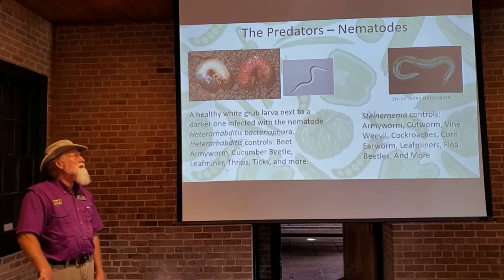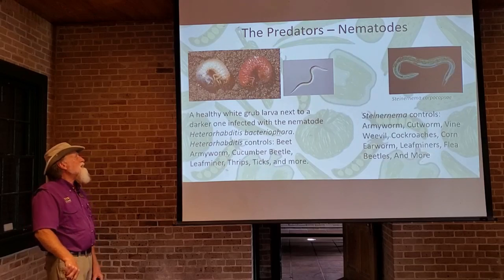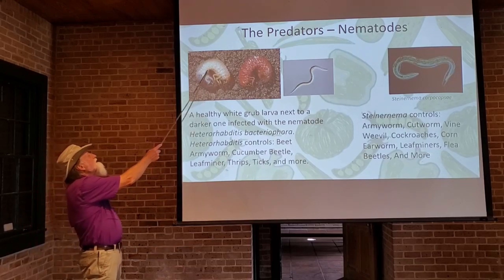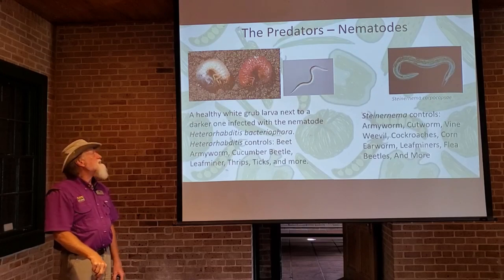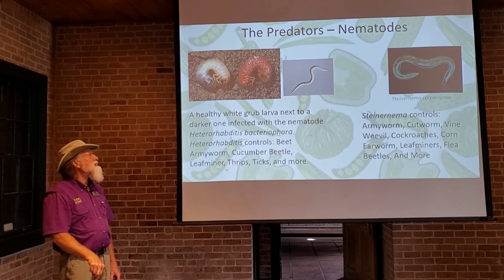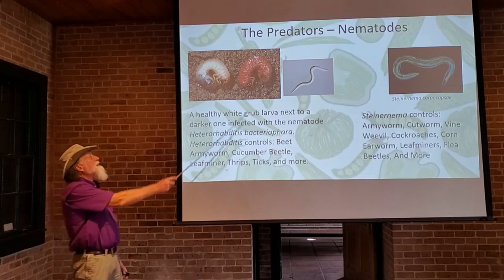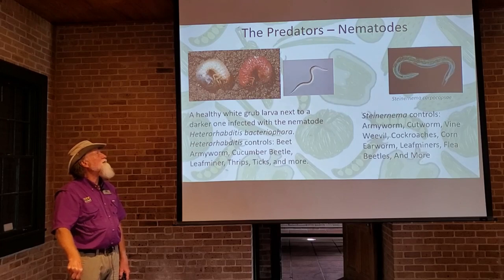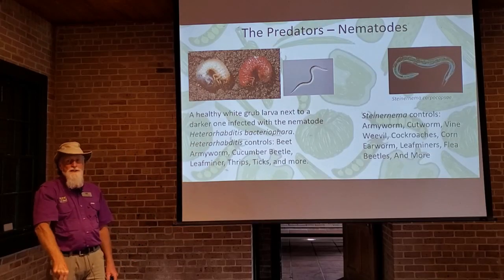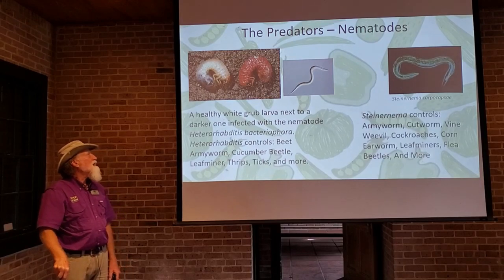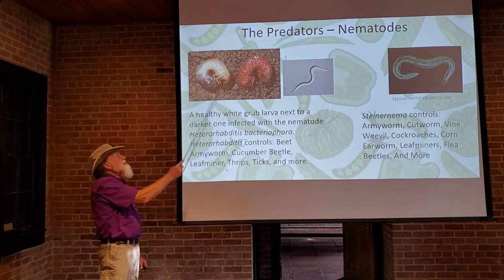There are quite a few different predatory nematodes. Two commercially available examples are shown here. In this picture you can see a healthy white grub and a grub that the nematodes are preying on. Interestingly, when nematodes are inside a grub or caterpillar, the host doesn't shrivel up and dry out — instead you'll usually see a discoloration due to all the digestion happening inside. So it looks the same size, just a different color.